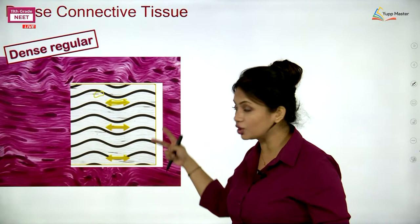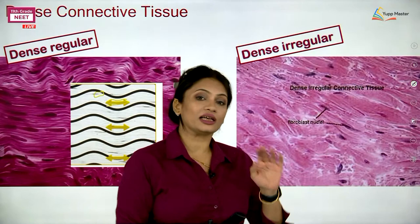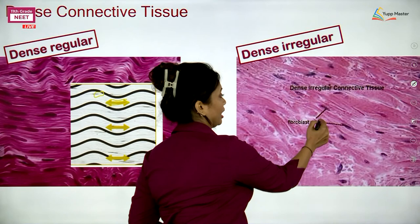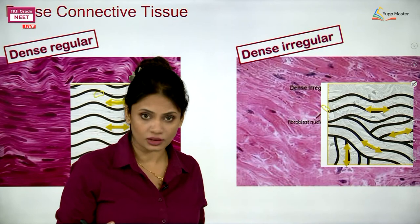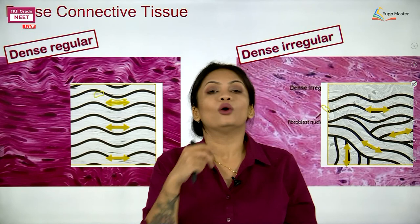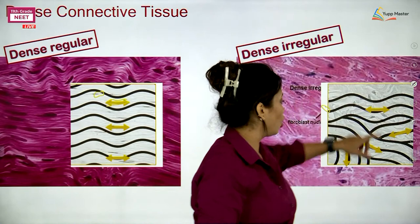Let us see how the irregular one looks. When I say dense irregular connective tissue, it is made of the same components — fibroblasts — but the fibres are not arranged in a parallel form. The fibres here are arranged in a haphazard manner, which is why we call this dense irregular connective tissue. The biggest example here would be that of the skin.